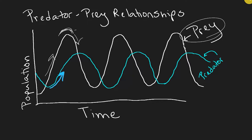Then the predators start to get less food, so their population is going to peak and drop back down. Both the predator and prey populations will continue with this cycle.